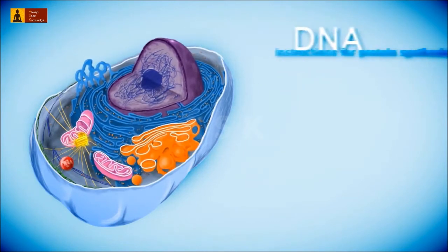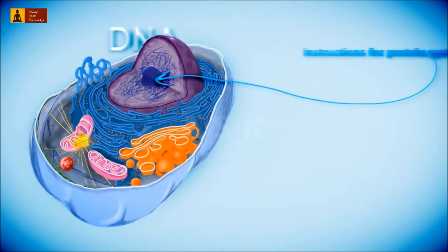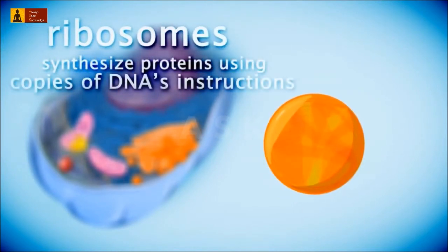DNA is basically a set of instructions for ribosomes to follow. It contains genes that code for specific proteins. Ribosomes synthesize proteins and can either be freely floating in the cell or attached to the endoplasmic reticulum.